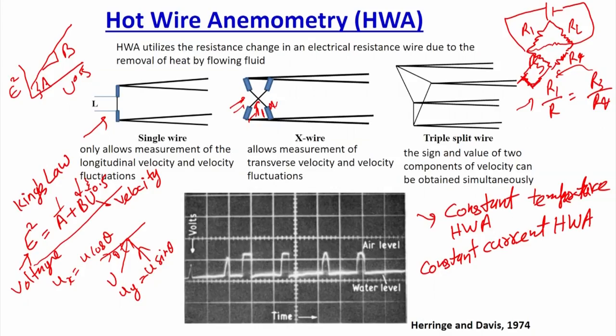As shown in the Herringe and Davis 1974 paper, when the hot wire anemometer is placed in two-phase flow, you see voltage at two levels: one when water is in contact and another when air is in contact. You get two different voltage levels, calibrate for both phases, and identify which phase is present based on the voltage range.